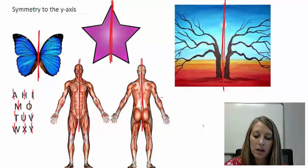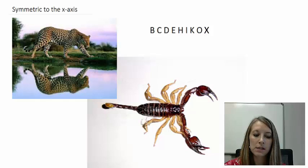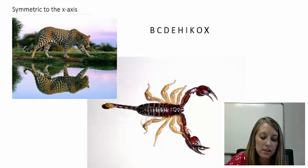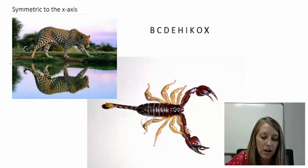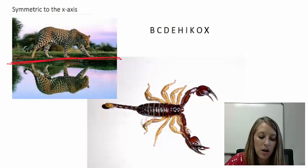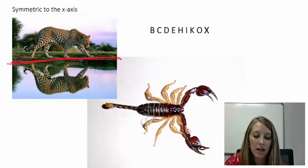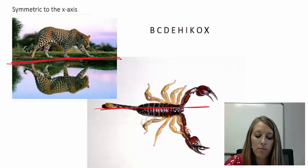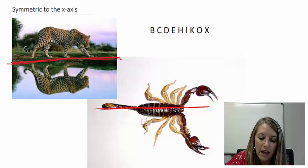Similarly, we can also have something symmetric to the x-axis, meaning we can fold it over the horizontal x-axis and it matches there. This tiger picture is not perfect because I don't have an exact straight horizontal line, but you can see we're pretty close. I can fold it over that and it matches. Or this scorpion — I can fold it over my horizontal x-axis. Or in the alphabet, I can fold any one of these letters and it matches from the top and the bottom.